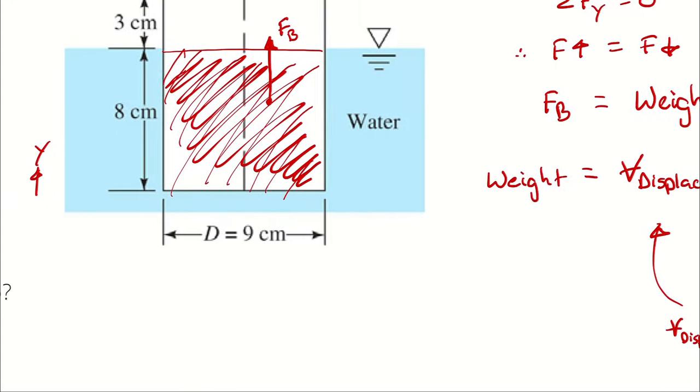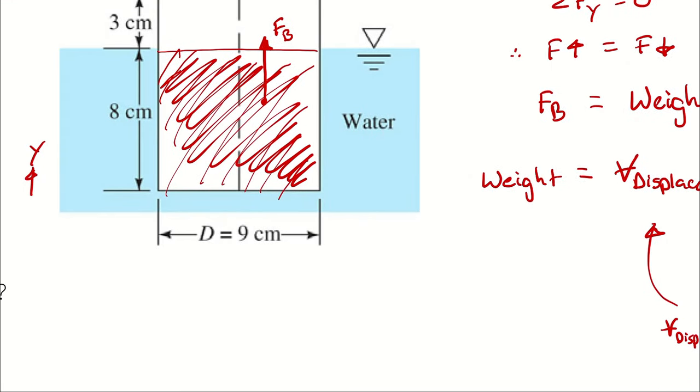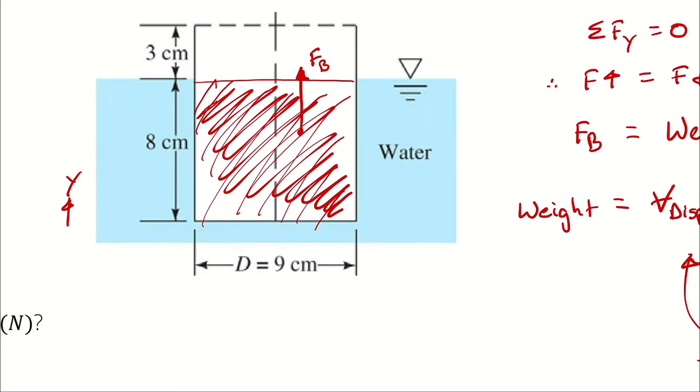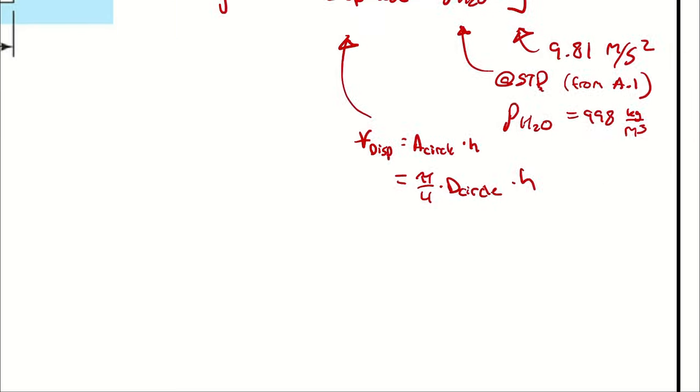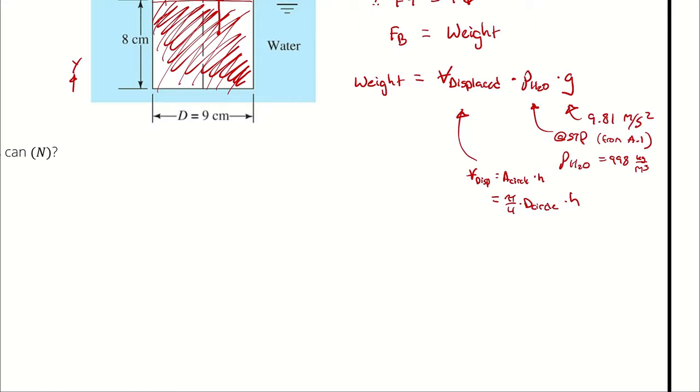The diameter of the circle is 9 centimeters. The height of the water displaced is 8 centimeters. And with that, we have enough information to compute an answer.